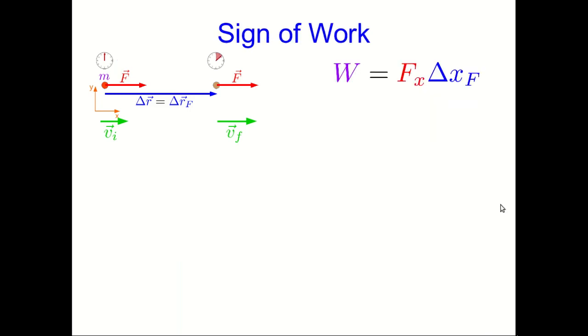Let's look at the sign of this work and make sure it behaves the way we think it should. So in the picture I've drawn, the force and the force displacement vector point in the same direction, and they're both in the positive x direction. And so fx is positive, and delta xf is also positive, and so the work is positive, which means the kinetic energy increases. That's what we expected. We expected that when the force pointed in the same direction as the force displacement, we would get a positive work.